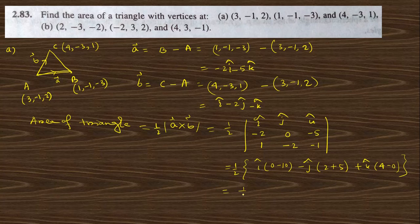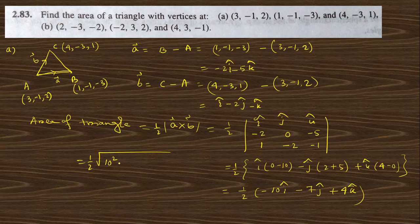So a cross b = −10i cap − 7j cap + 4k cap. The area of the triangle is half the magnitude: (1/2)√(10² + 7² + 4²) = (1/2)√(100 + 49 + 16) = (1/2)√165. So the area is (√165)/2 square units.